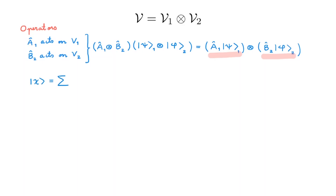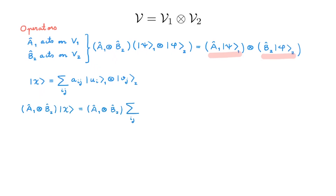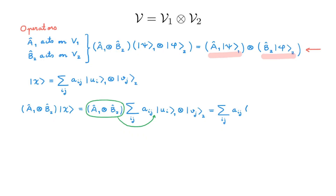To see this, consider a general ket |χ⟩ written in the uv basis, which may or may not be given as the tensor product of two states from V1 and V2. We consider the action of the tensor product operator on |χ⟩. We write out |χ⟩ in the uv basis, and because we're working with linear operators, we can move the operator inside the sum. Looking at how the tensor product of operators acts, we can write this as the sum over i, j of the expansion coefficients aᵢⱼ, and then the tensor product between A₁|uᵢ⟩ and B₂|vⱼ⟩. In this way, we can build the action of the tensor product A₁B₂ on general kets in V.